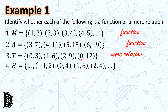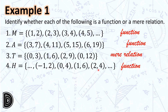Number 4: We have set H with ordered pairs (-1,0), (4,1), (6,2), (4). Although the value of y is repeated — that is 4 — this is a function since each value of x is related to only one value of y. 0 is related to 4 only, and 2 is related to 4 only.